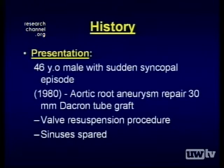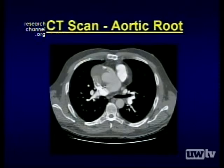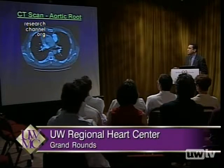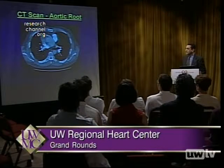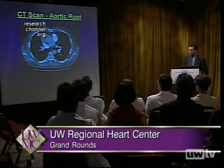This is a typical example of a patient in which this has occurred. This is a man who, at the age of 26, presented with an aortic dissection and at that point had a tube graft placed in the ascending aorta of Dacron. The aortic valve was resuspended, the sinuses were spared, and at that point there was not a lot of thought given to the fact that this may be associated with a connective tissue disorder. Twenty years later, the patient presents with a sudden syncopal episode. The CAT scan shows the tube graft of the aorta, the ascending aorta, and a large pseudoaneurysm — a weakness of the aorta with blood in the wrong layer at the level of the graft itself.